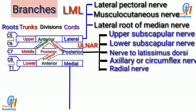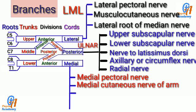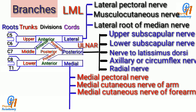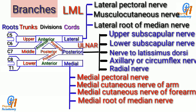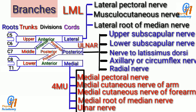Branches of the medial cord: First is the medial pectoral nerve. Second and third are the medial cutaneous nerve of the arm and forearm. Fourth is the medial root of the median nerve. Fifth is the ulnar nerve. The first four branches start with M, and the last branch starts with U. So remember the medial cord branches by: four M, U.